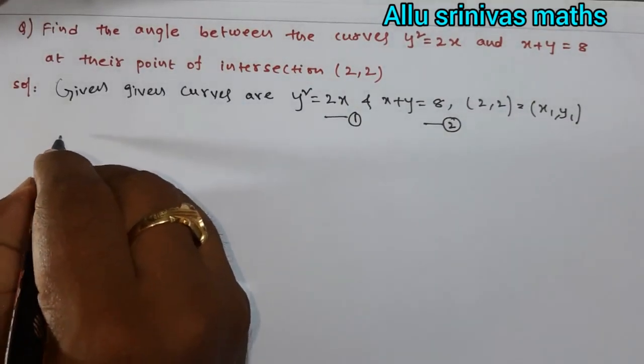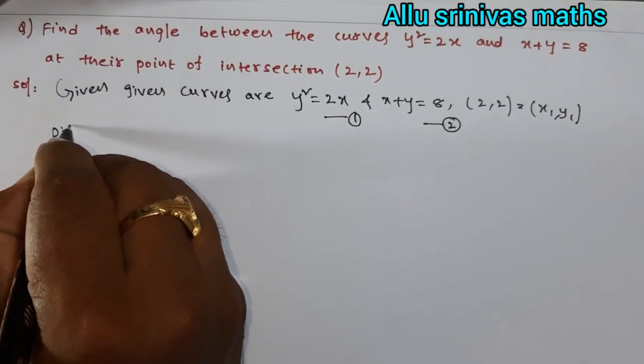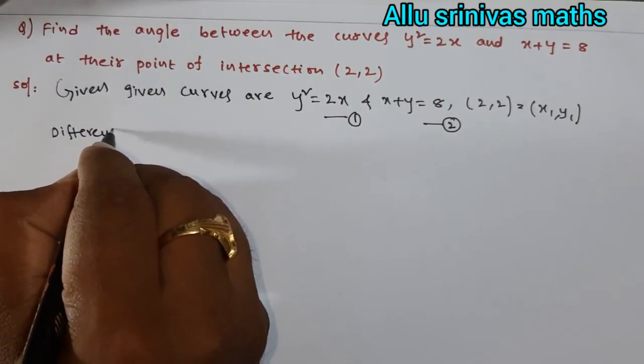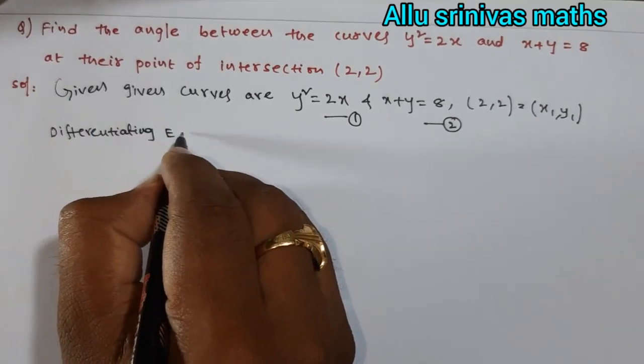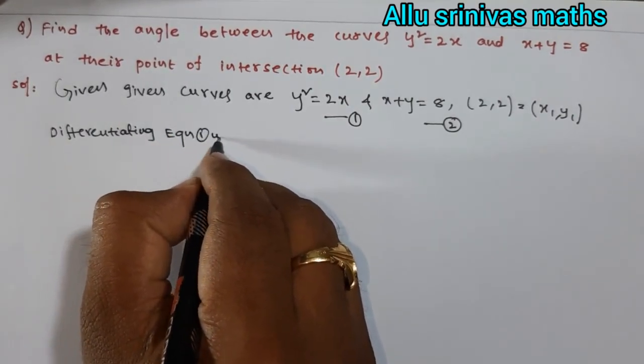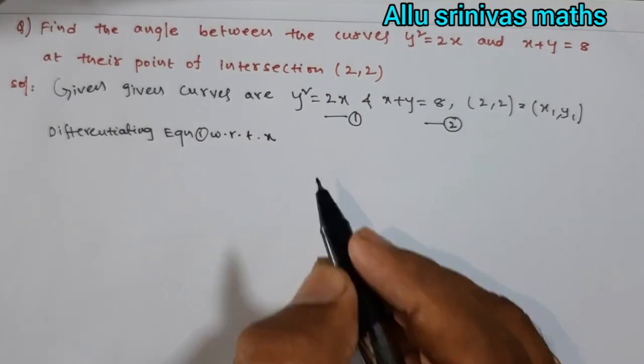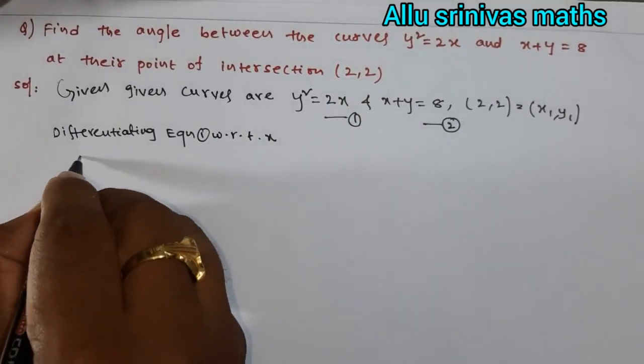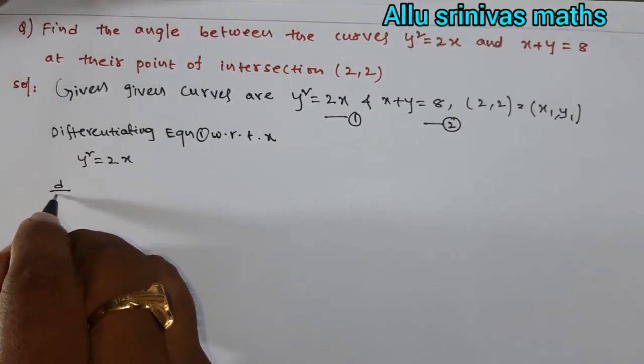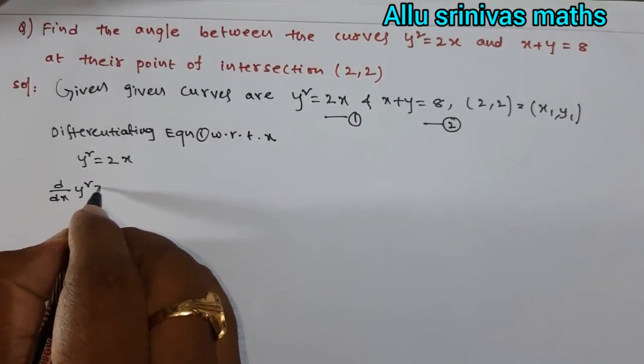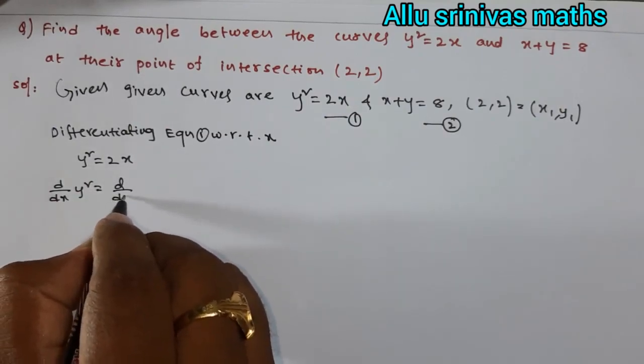So differentiating equation 1 with respect to x: y² = 2x. We apply d/dx on both sides. d/dx of y² = d/dx of 2x.